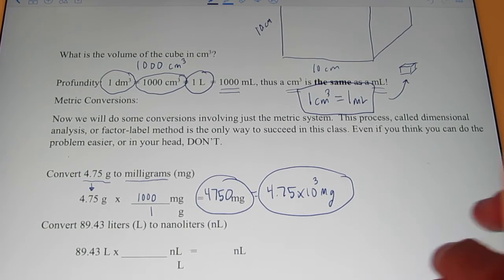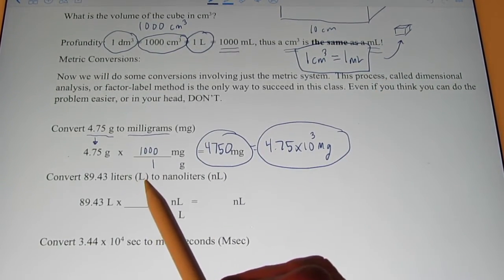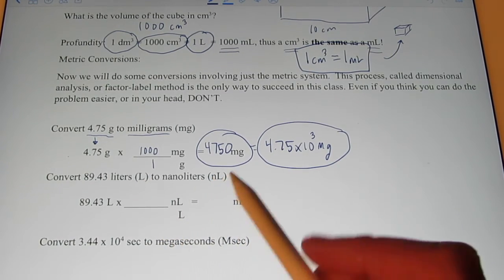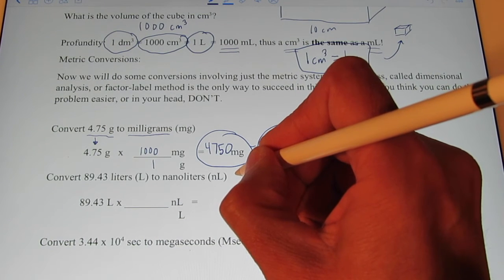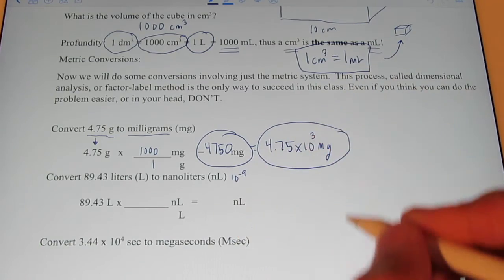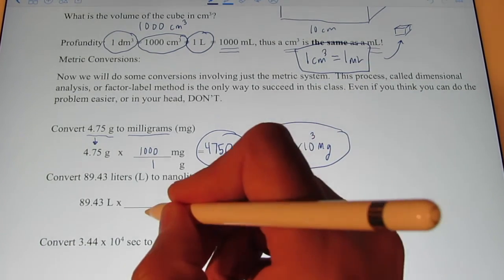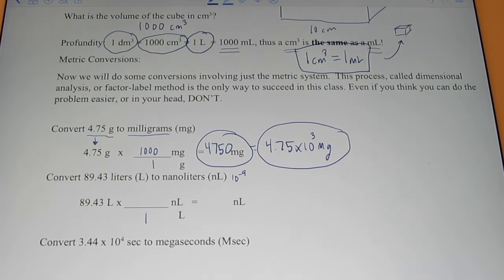Let's try another one. Let's convert 89.43 liters into nano-liters. Now, if you remember, nano is a really tiny number. It's ten to the negative ninth. So, if I had one liter, how many of those nano-liters would be in it?